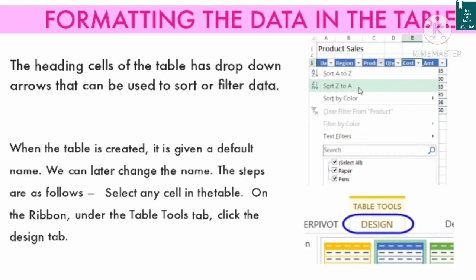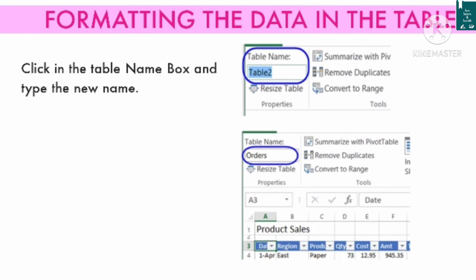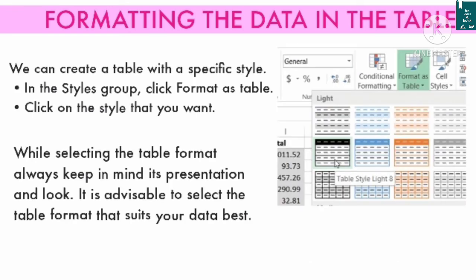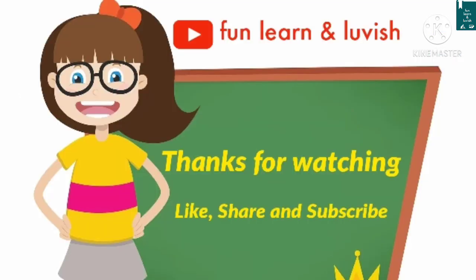We can later change the table name. Select any cell in the table, on the ribbon under the Table Tools tab click the Design tab, then click in the Table Name box and type the new name. We can also create a table with a specific style: in the Style group click Format as Table and click on the style you want. Always keep in mind the presentation and look, and select the table format that suits your data best.